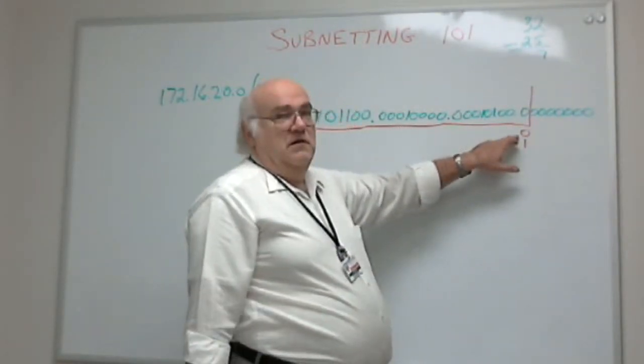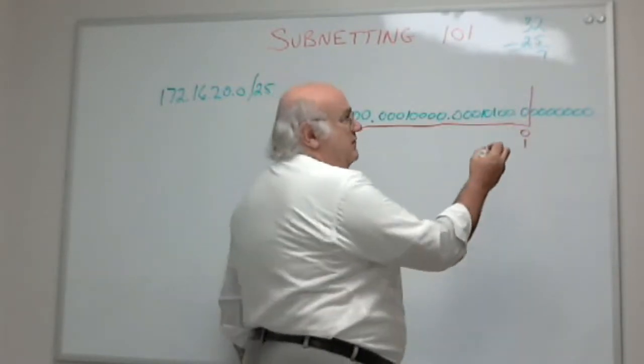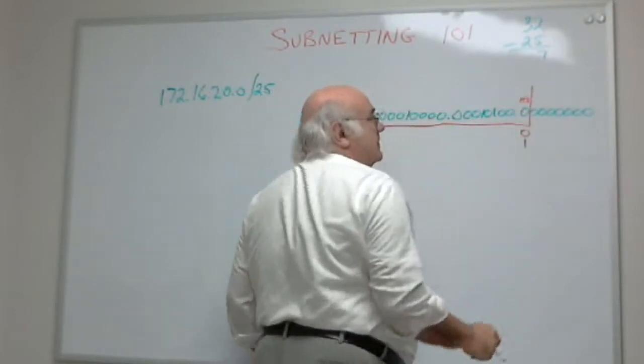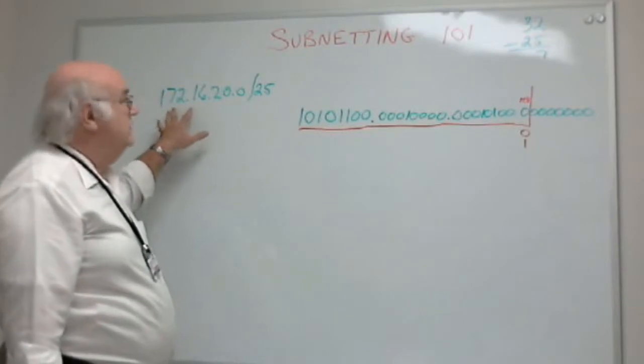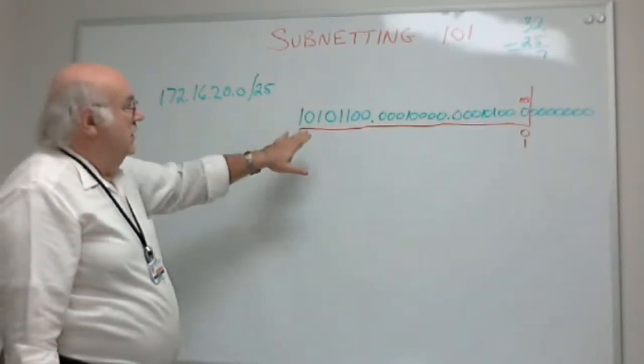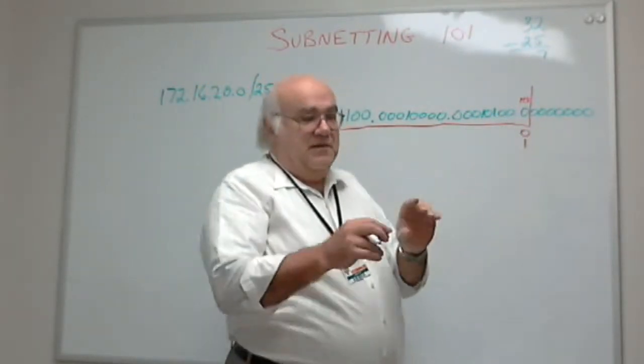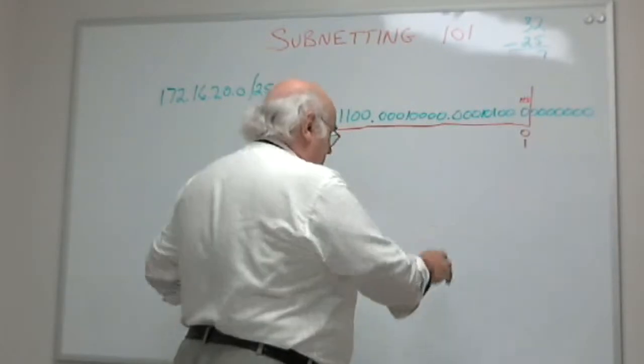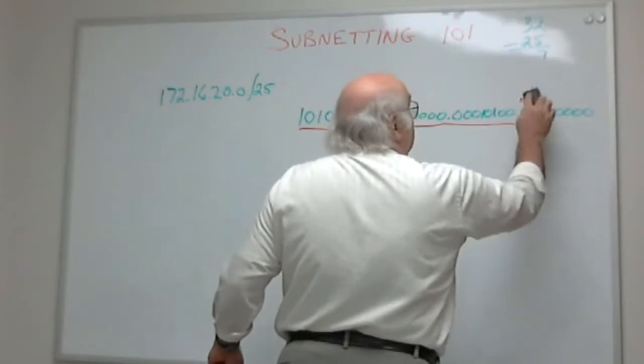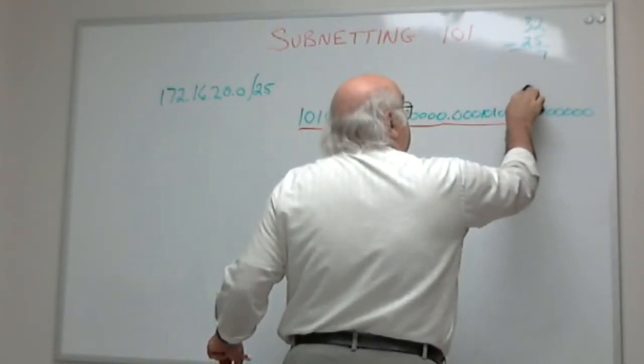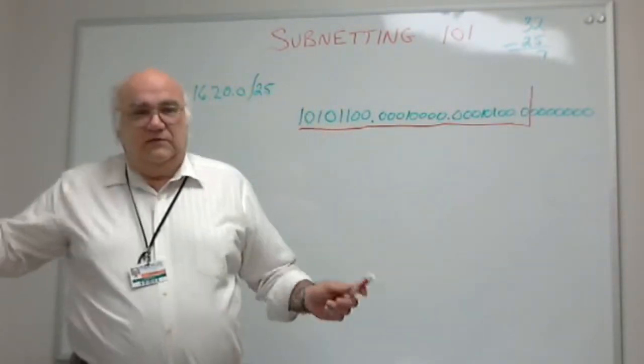If it's zero, this whole byte is zero. If it's one, the bit positional value of that bit is 128. So that would change this network address from 172.16.20.0 to 172.16.20.128. But we're not doing that. We're just calculating our various addresses with 172.16.20.